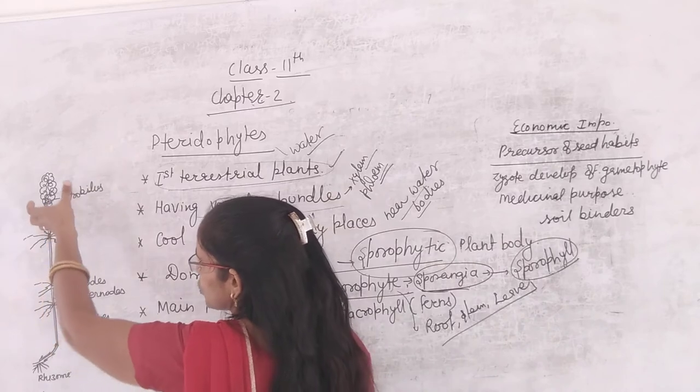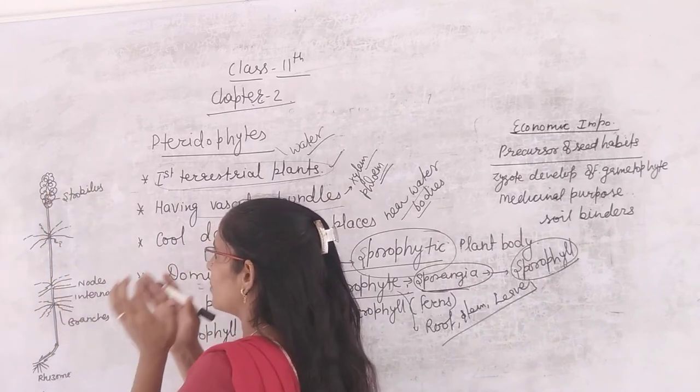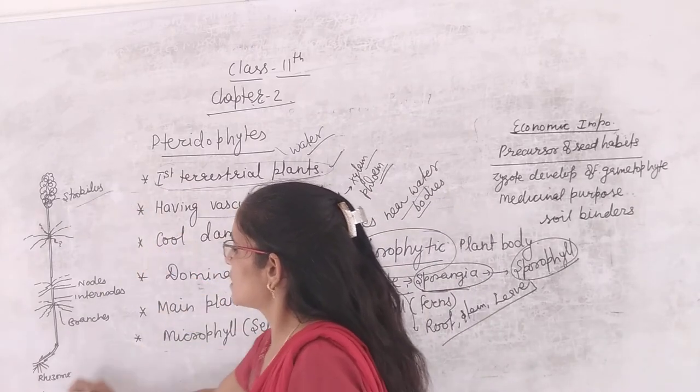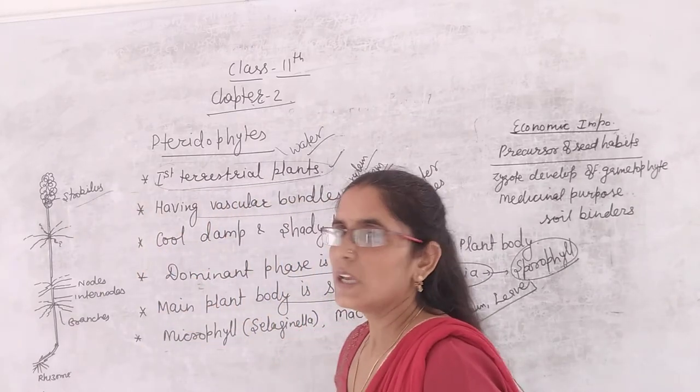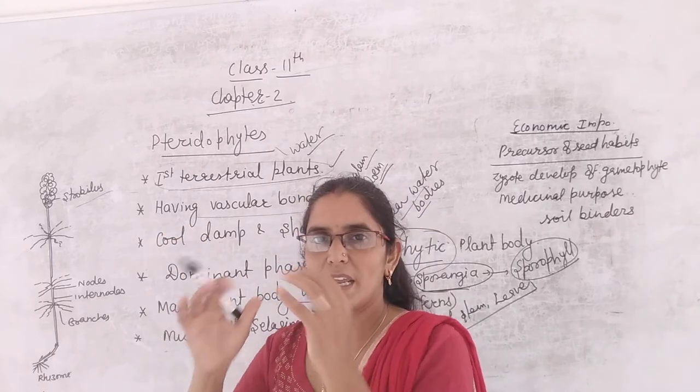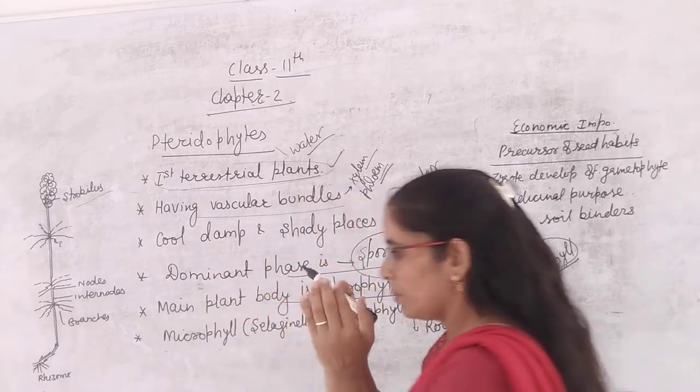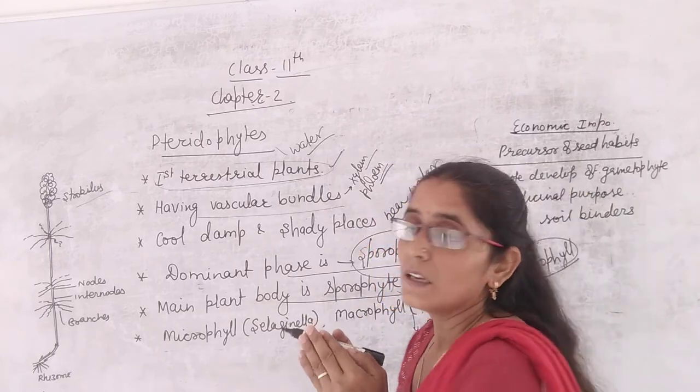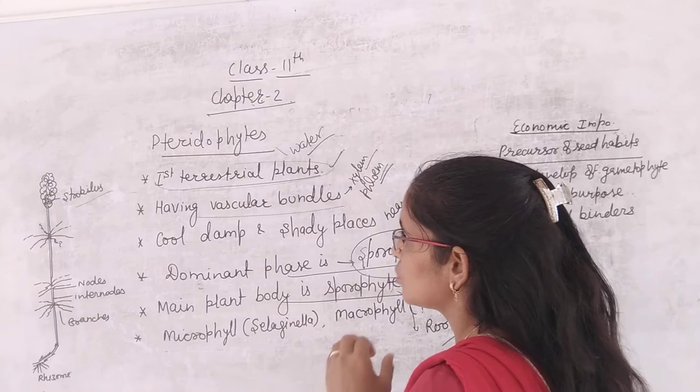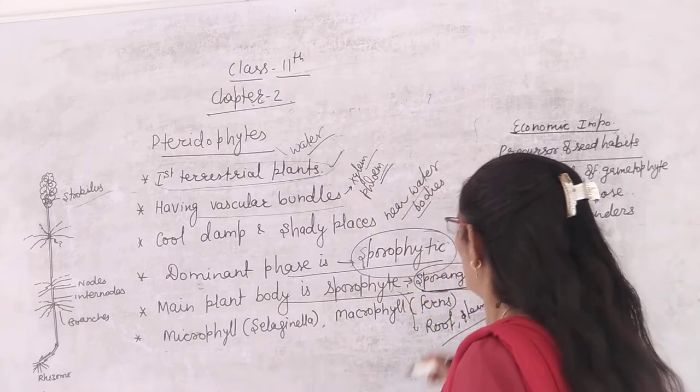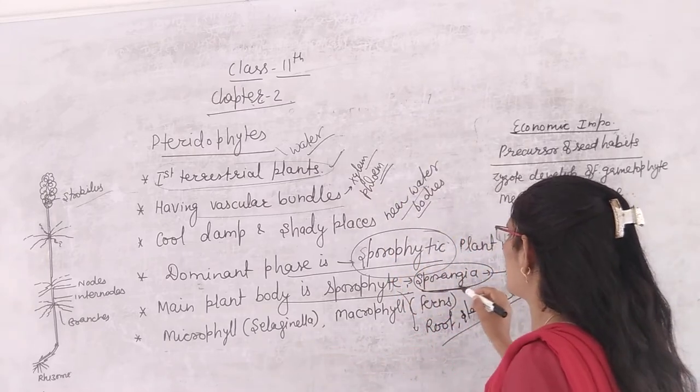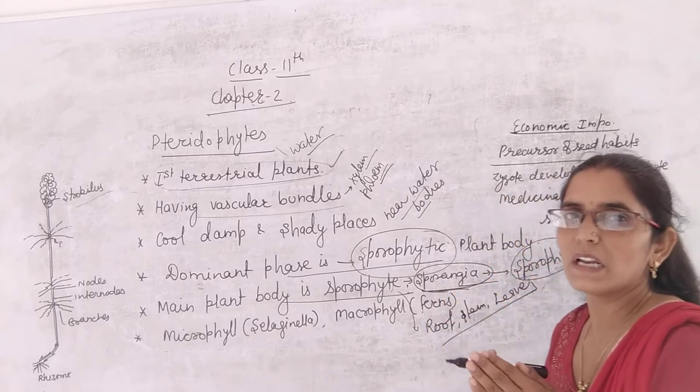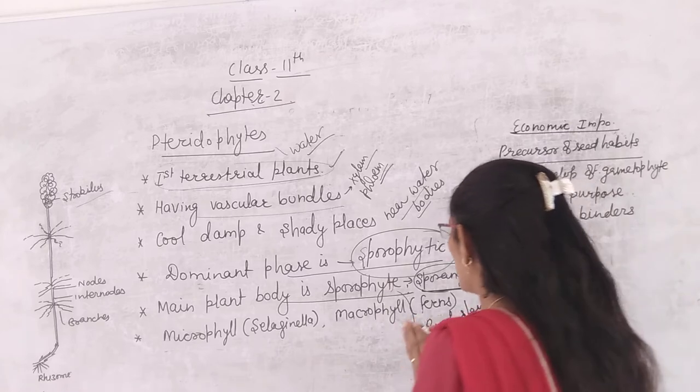Sometimes what happens? Sporophylls are assembled and they accumulate to form a cone-like structure that is known as strobilus. This is the example of Equisetum. In Equisetum, the sporophylls are combined, they are extended and they are completely joined compactly, and they are forming a strobilus or cone. When they are compactly packed, they will create a cone-like structure, which is called strobilus or strobili.